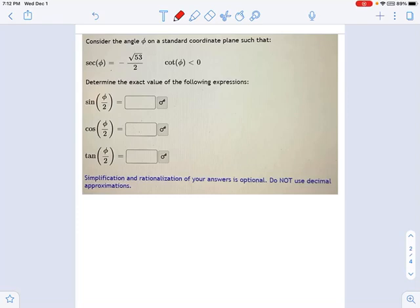So now it's time to put the half-angle trig identities to work. We're going to use these half-angle identities to solve this problem. If we know that there's an angle phi on a standard coordinate plane such that the secant of phi is negative square root 53 over 2, and the cotangent of phi is less than 0, I want to know what's the sine of phi over 2, what's the cosine of phi over 2, and so on.